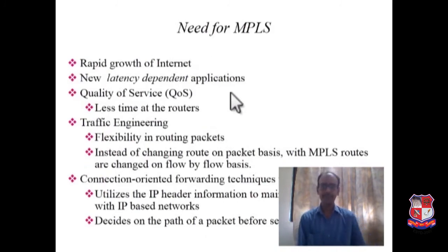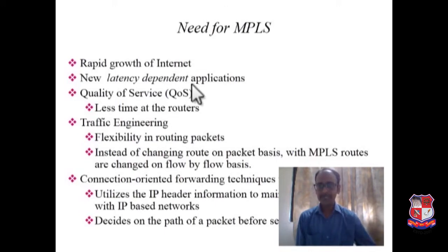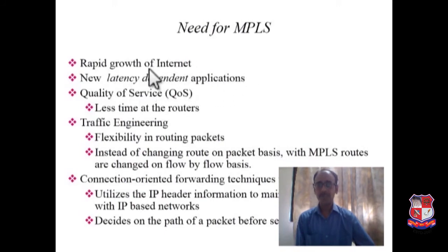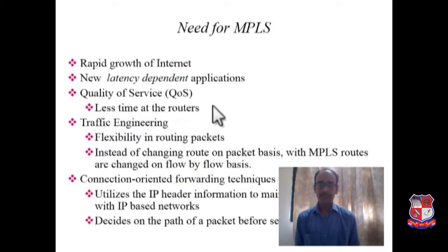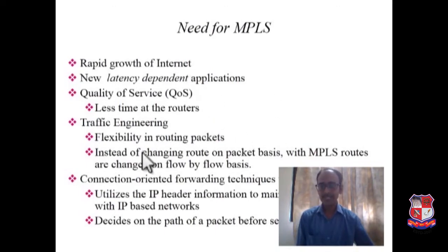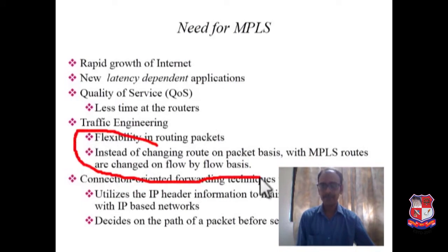So why has there been a need for MPLS? Earlier IP was working fine, but as soon as the internet grew rapidly and geographically expanded, latency-dependent applications like video conferencing emerged where response time is not tolerable. These applications demand that large amounts of traffic be forwarded in a rapid manner. Quality of service is needed — less time at the router, so the router must forward packets immediately rather than deal with longer queues. This is what we call traffic engineering. Flexibility in routing packets: instead of changing routes on a packet basis, with MPLS routes are changed on a flow-by-flow basis.